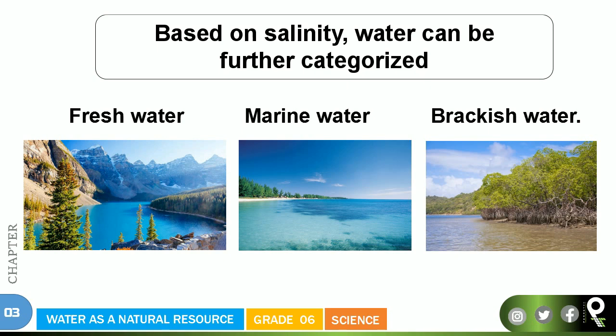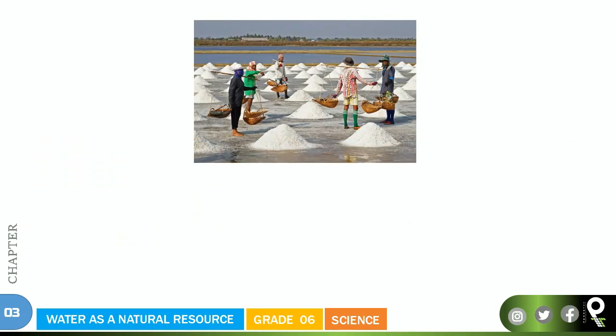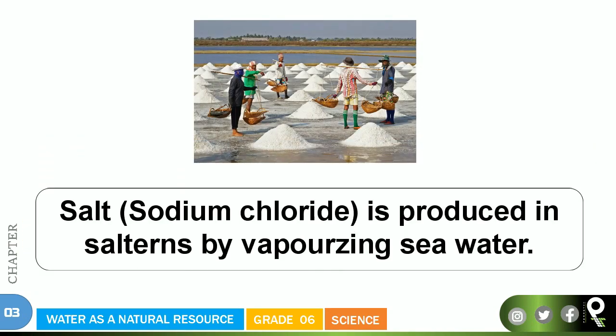Based on salinity or saltiness, water can be further categorized into fresh water, marine water, and brackish water. Fresh water is very familiar, marine water is seawater, and brackish water is something in between. Sodium chloride is produced in salt pans by vaporizing seawater — when the water is taken away from collected seawater, the sodium chloride gets produced. So the salt you eat at home is sodium chloride, mostly coming from seawater.